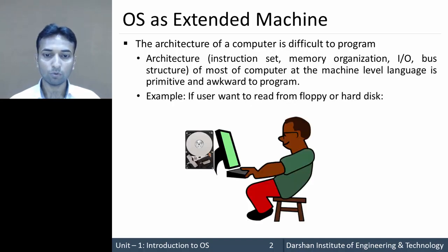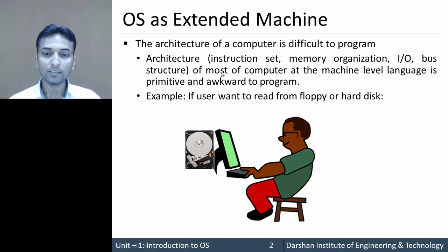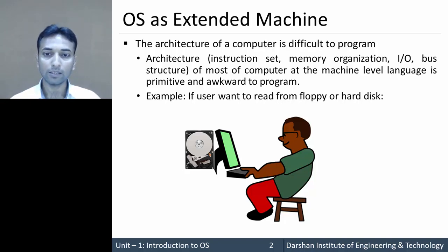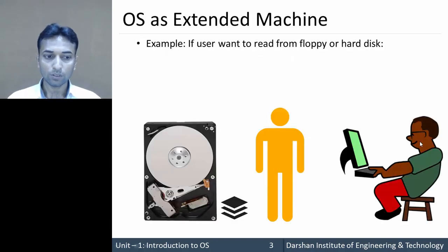For example, suppose a user wants to read some data from a hard disk. Here there is no operating system, so we consider this user is reading data from the hard disk without any interface or without any operating system involved. So how will this user read data from the hard disk? Suppose this user wants to read data — this one is the user, this one is the hard disk.